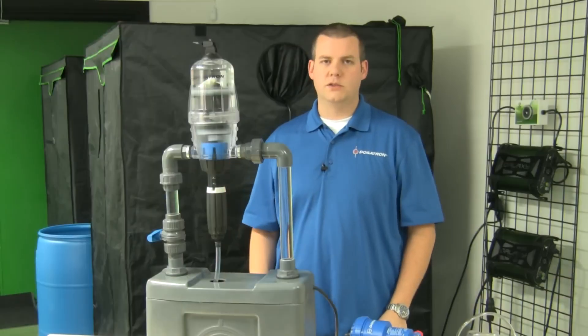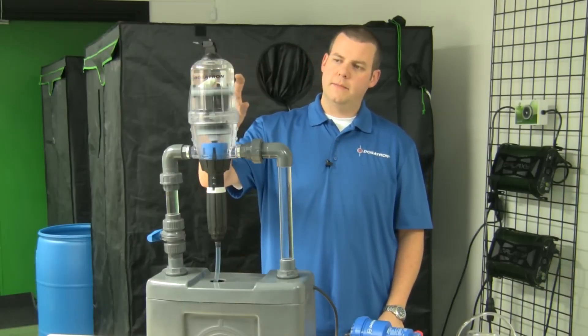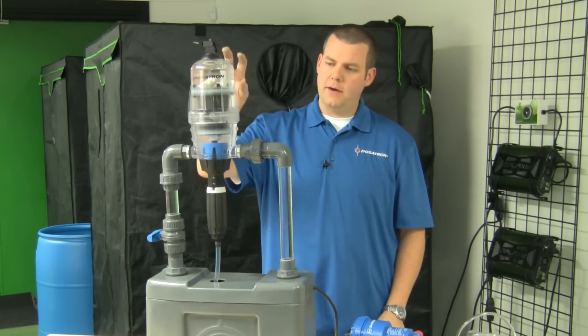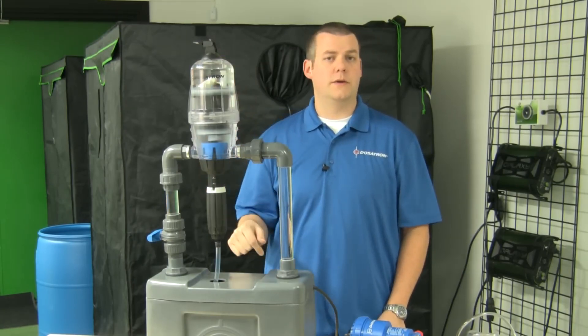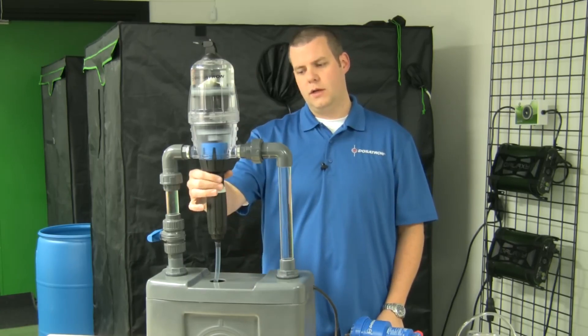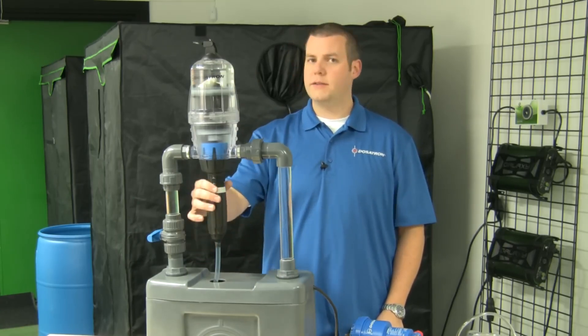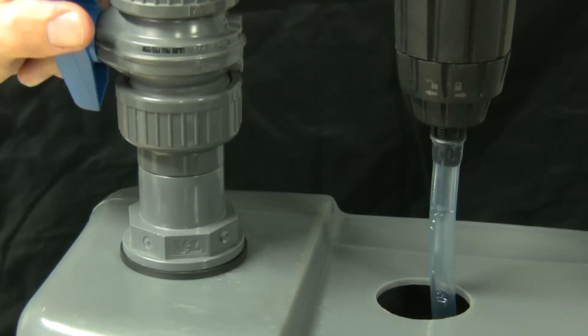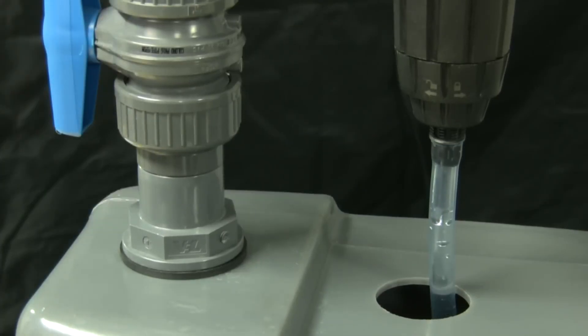The science behind a Dosatron is that we've got a piston which moves up and down that's connected to what we call a plunger. That plunger has a seal on the bottom that runs through the injection step. Working very similar to a syringe, it draws that product up, brings it up into the bottom housing and blends it right here in line.